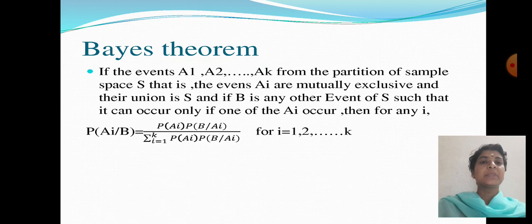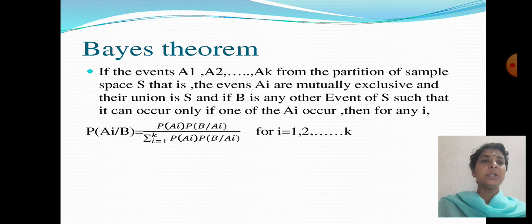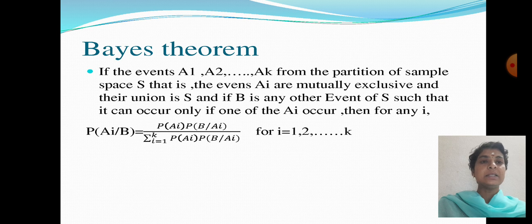Bayes theorem: If the events A1, A2, ...Ak form the partition of sample space S, that is the events A are mutually exclusive and their union is S, and if B is any other event of S such that it occurs only if and when the A occur, then for any i, probability of Ai given B equals probability of Ai times probability of B given Ai divided by sum of probability of Ai times probability of B given Ai.